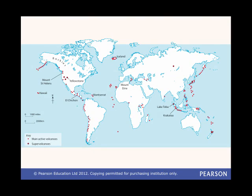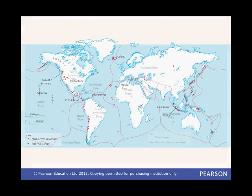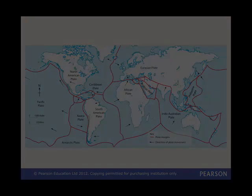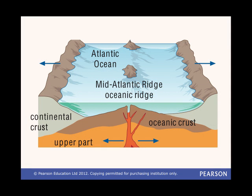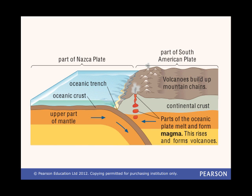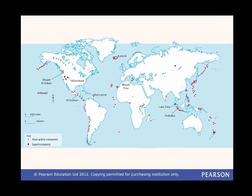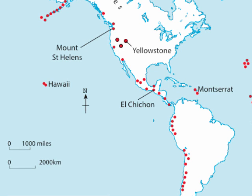If you compare the distribution of the world's volcanoes with the map of plate boundaries, you can see a very close match. This is because most volcanoes form either at constructive boundaries, where the Earth's crust is being pulled apart, or at destructive boundaries, where oceanic crust is being pulled down and melted into the mantle. You can sometimes get volcanoes away from plate boundaries, where a plume of super-hot magma rises up from the mantle, or where the crust is particularly thin or weak. These locations are often called hot spots. A good example is the Hawaiian island chain, which has formed as the Pacific Plate has passed over a hot spot.